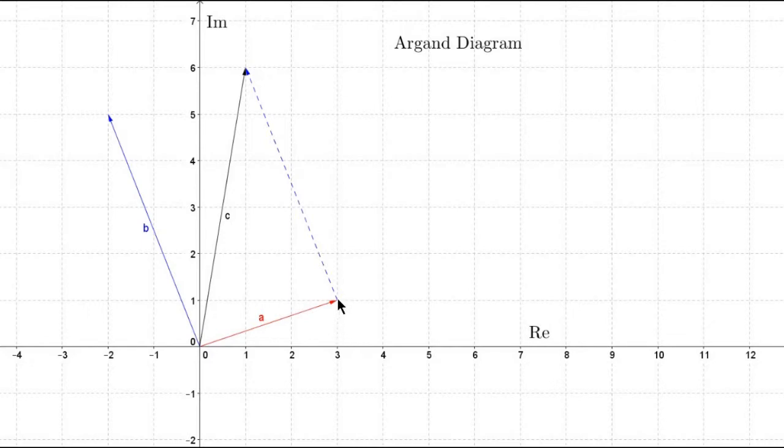So, 3 plus i plus negative 2 plus 5i equals to 1 plus 6i. We can add complex numbers as we add vectors. And that is a very important idea that we can use to solve many problems with complex numbers.